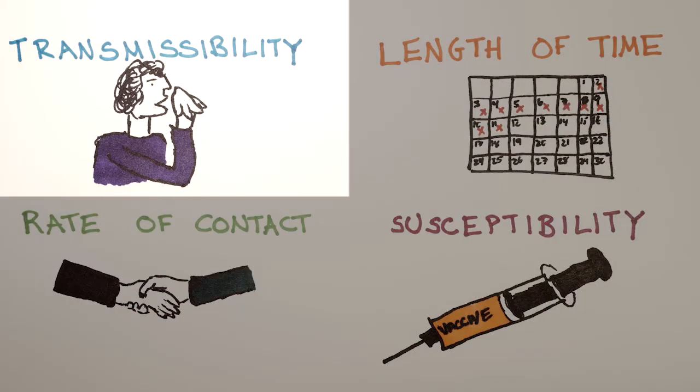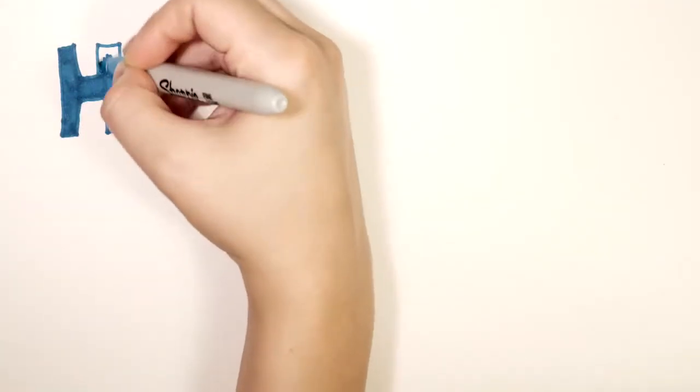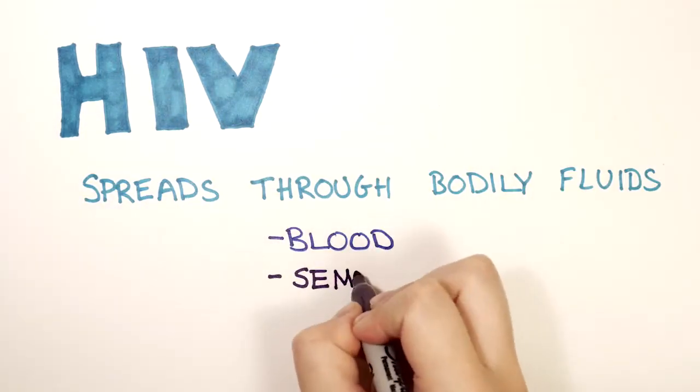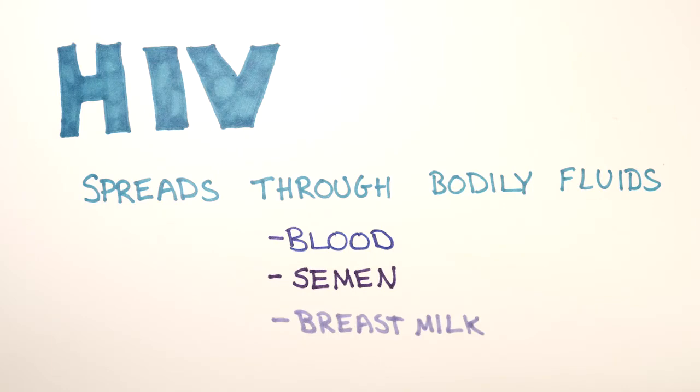Transmissibility is determined by how the infectious agent or pathogen spreads. For example, HIV spreads through bodily fluids, such as blood, semen, or breast milk.